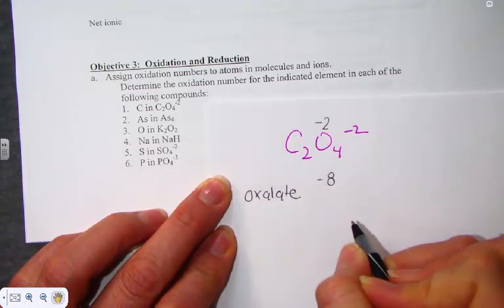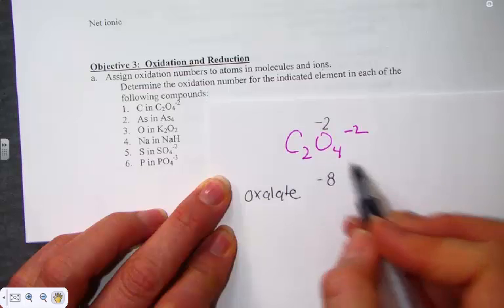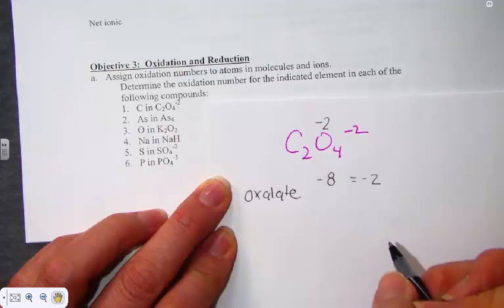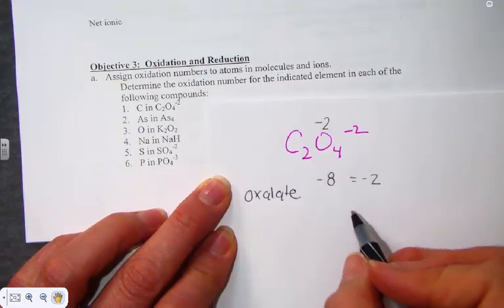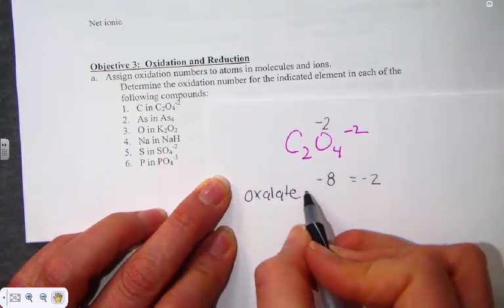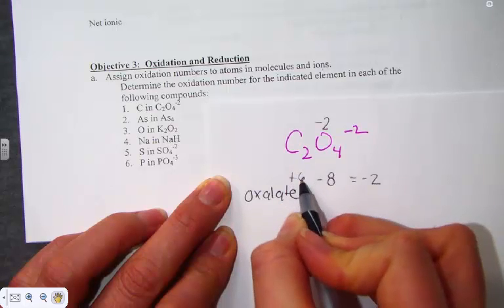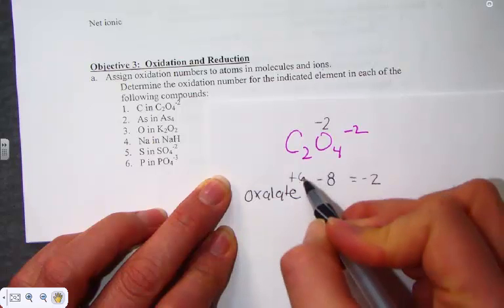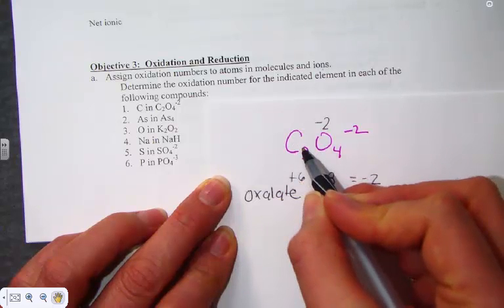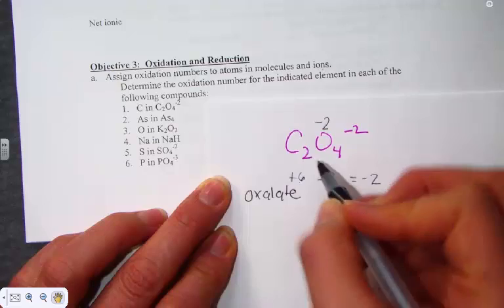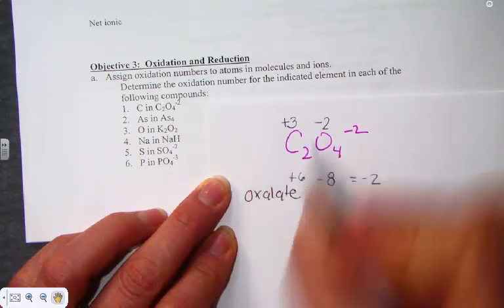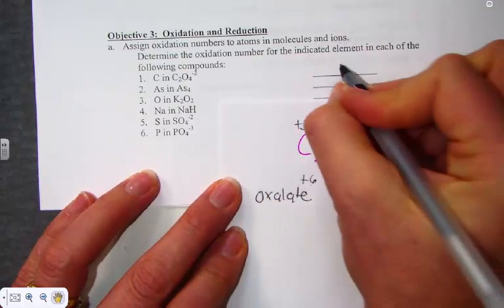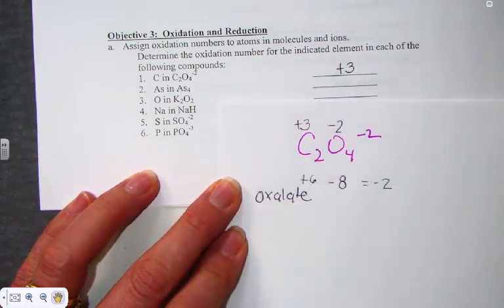Rule 6 from our oxidation numbers would show us that polyatomic ions will add to their charge, a negative 2 in this case. That shows us that the net positive charge would have to be a 6. A positive 6 and a negative 8 adds to a negative 2. Two units of the carbon, 6 divided by 2, each would have to be contributing a positive 3. Carbon in the oxalate polyatomic ion is a positive 3 charge.